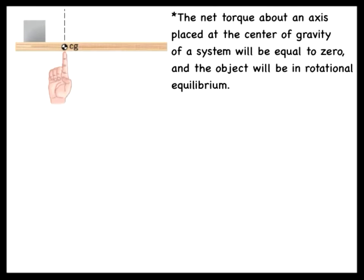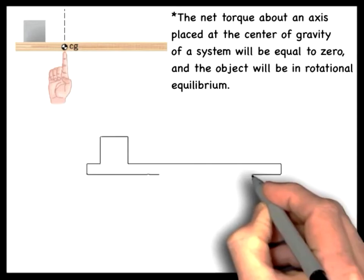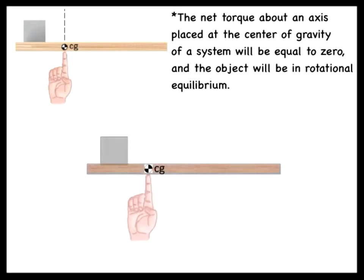The center of gravity plays an important role in determining whether a group of objects is in equilibrium. The plank and weight, for example, are in equilibrium if the axis of rotation is placed at the system's center of gravity. However, if we change the position of the weight resting on the plank, say further to the left, this will shift the position of the system's center of gravity. The net torque on the system will no longer be equal to zero, and the system will rotate.